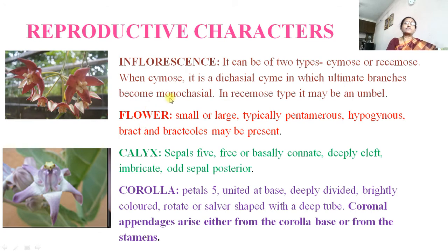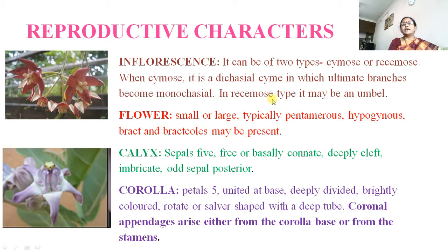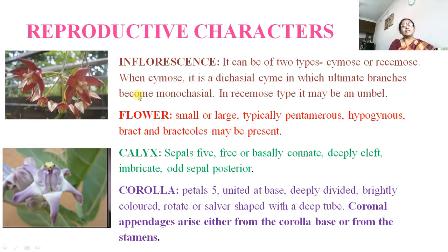Reproductive characters: inflorescence is of two types — sometimes cymose, sometimes racemose. When cymose, it is a dichasial cyme in which ultimate branches become monochasial. When racemose type, it may be umbellate. Flowers are arranged on the floral axis, which is called the inflorescence.